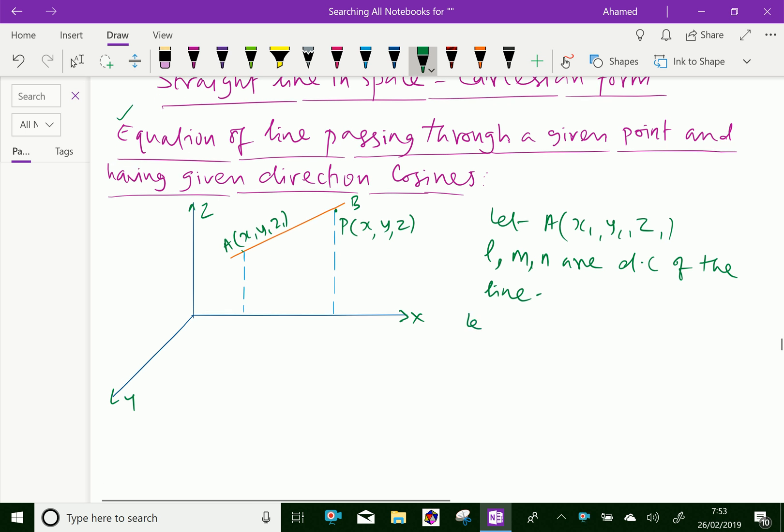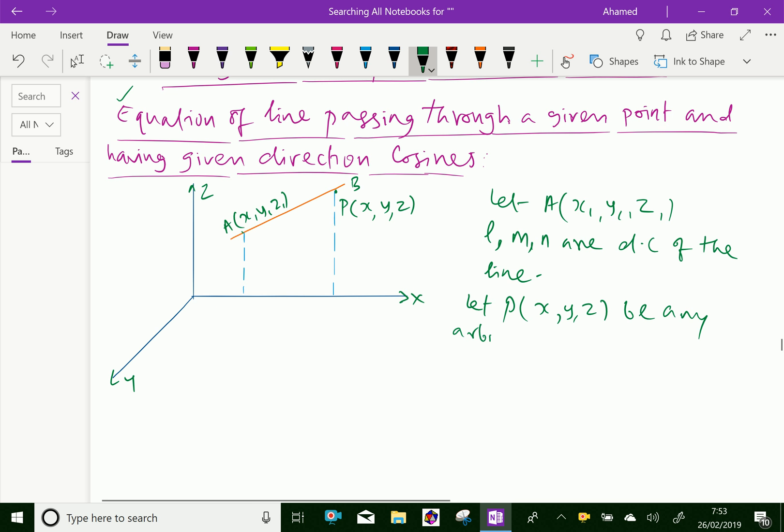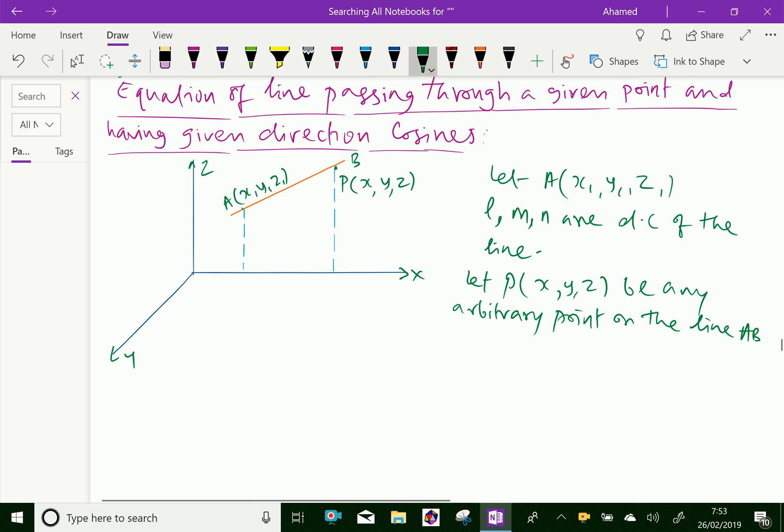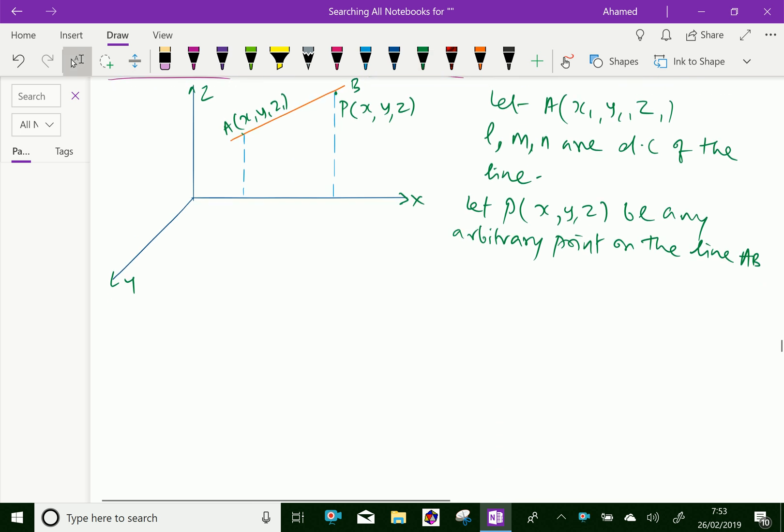Now, let the point P of X, Y, Z be any arbitrary point on the line AB. Let AP equal to R.